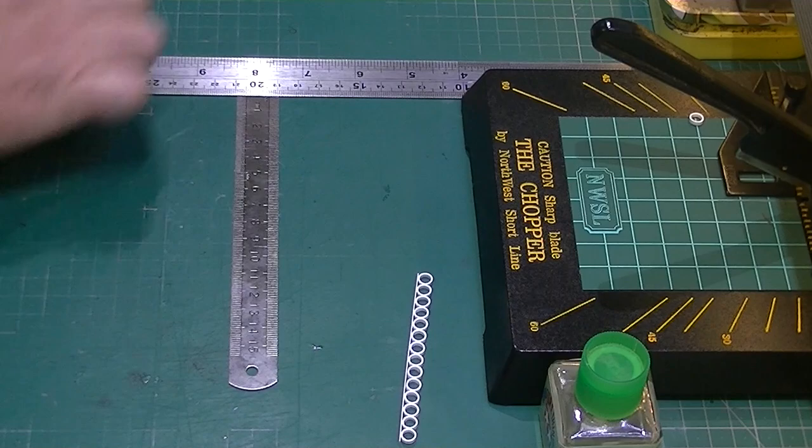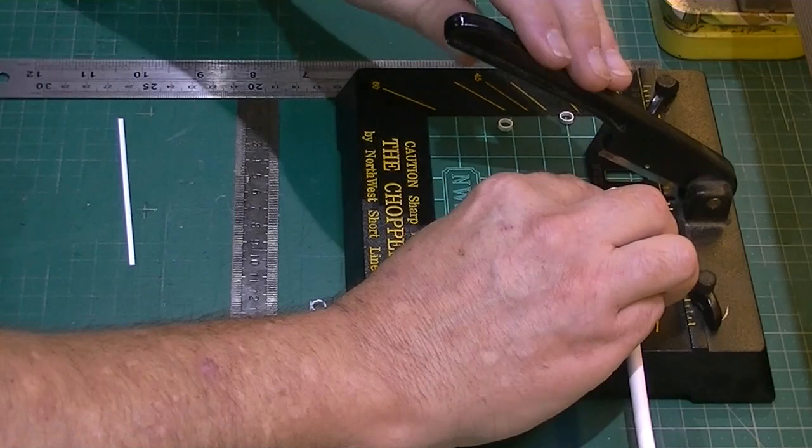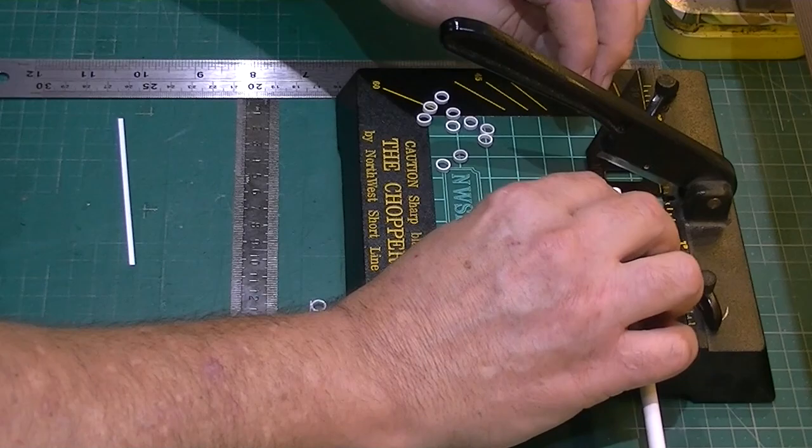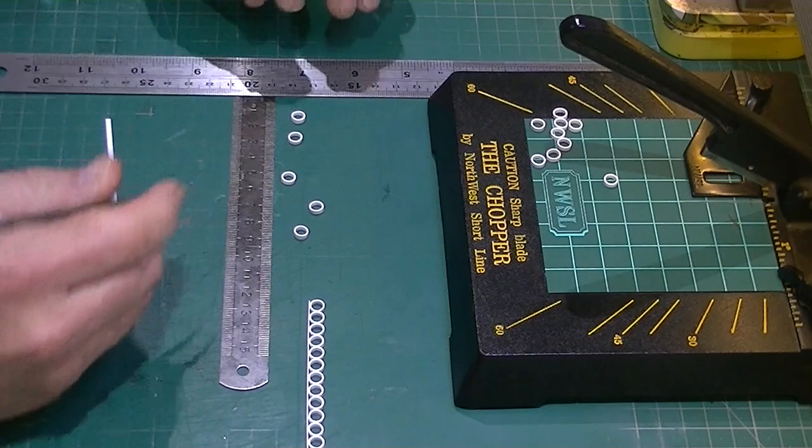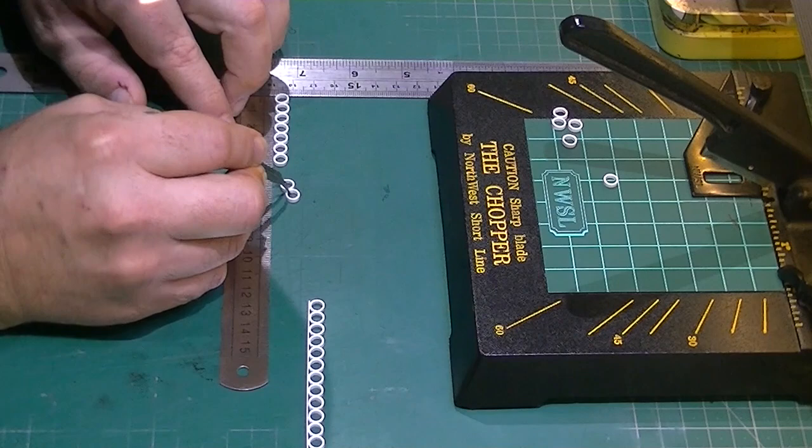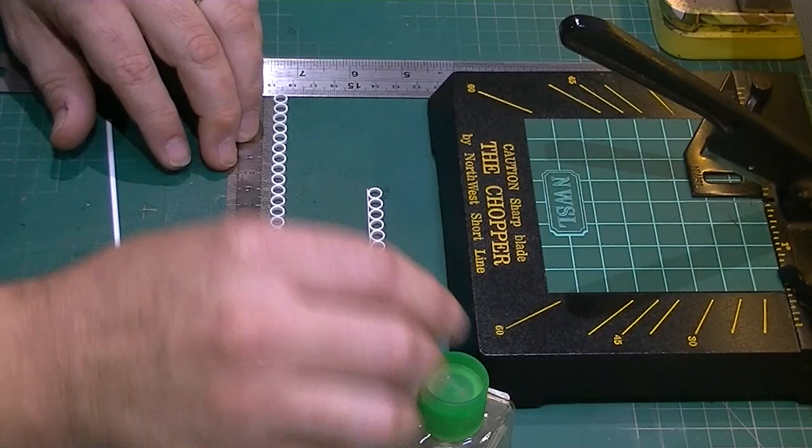Cut some more of those rings from our 6.5 mm tubing. And again line them up and glue them up with that extra thin.